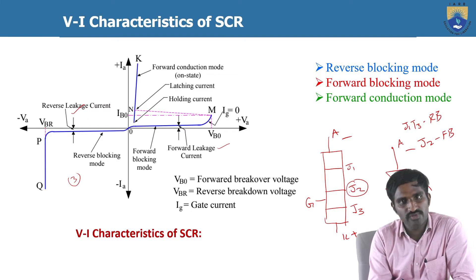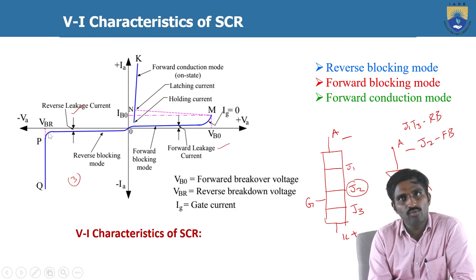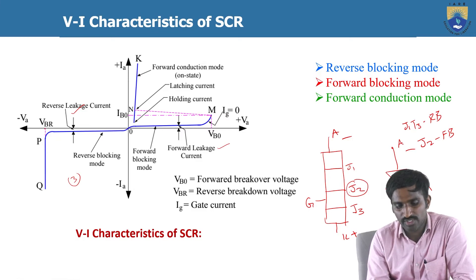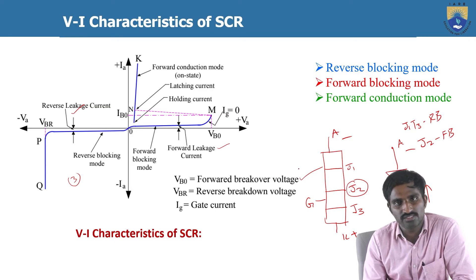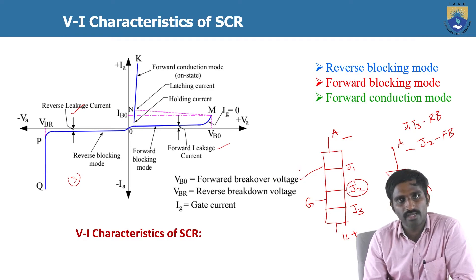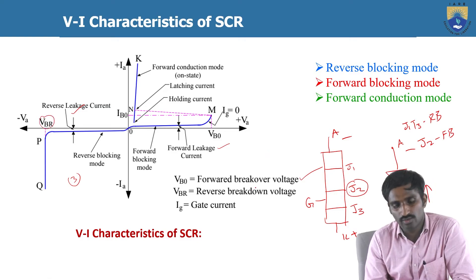At a particular reverse voltage, the thyristor will turn off — that voltage is called the reverse break-over voltage or reverse breakdown voltage, denoted VBR. When the thyristor is turned on in the forward direction, that voltage is called VBO, meaning the forward break-over voltage. When the thyristor turns off due to reverse biased voltage, that voltage VBR is the reverse breakdown voltage.